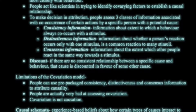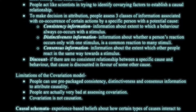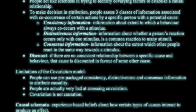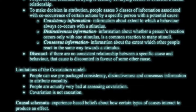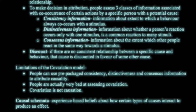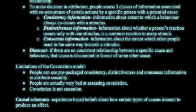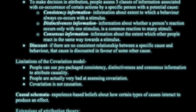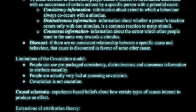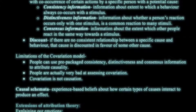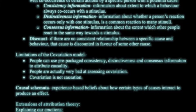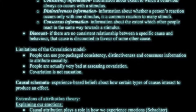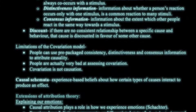Distinctiveness information is about whether a person's reaction occurs only with one stimulus — judging whether it is a common reaction to many stimuli. Consensus information concerns whether other people also agree about the cause. There is also discounting, where one cannot form a consistent relationship between a specific cause and behavior, so that cause is discounted in favor of some other cause.